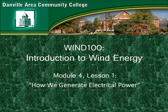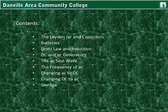This is lesson one for module four: how we generate electrical power. Contents of this lesson: the Leyden jar and capacitors, and batteries.